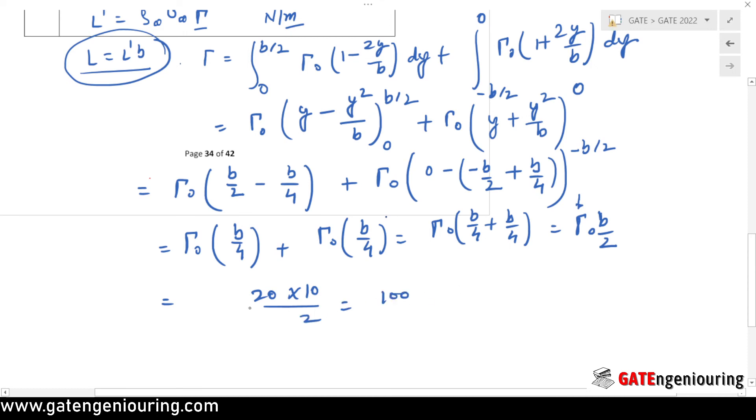Now lift per unit span: ρ u and Λ. ρ is 1.2, u velocity is 80, and this is 100. So 1.2 into 80 is 96, so 9600 newton per meter is L'.